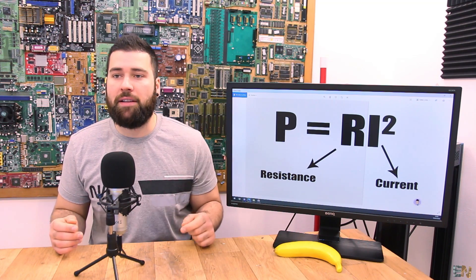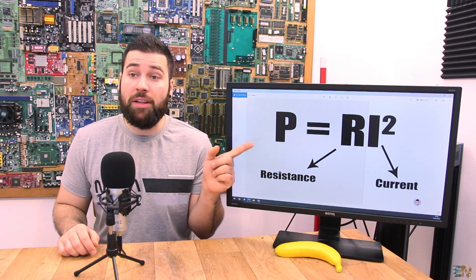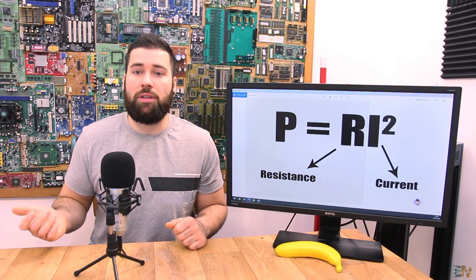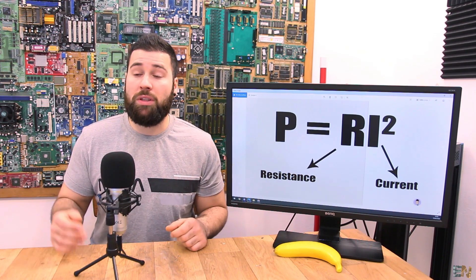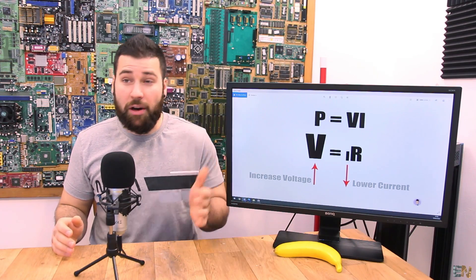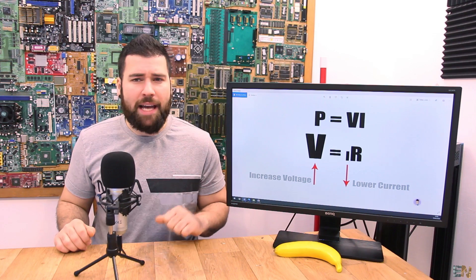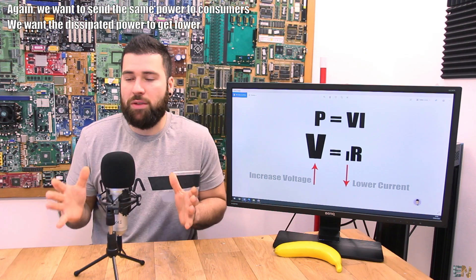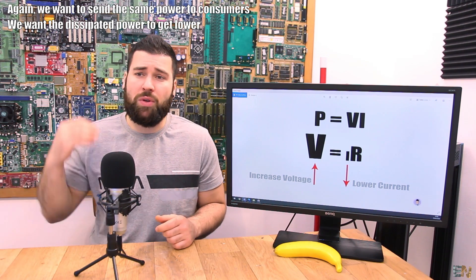The problem is in the squared factor. If I reduce the resistance by half, the power loss also reduces by half. But if I reduce the current by half, the power loss reduces by 4 times because of the squared factor — the power loss reduces on an exponential scale. So the better solution is to lower the current value, not the resistance. To reduce the current while keeping the same resistance and the same power in the lines, we have to increase the voltage significantly. Increasing the voltage is a lot easier than reducing the resistance of the cable.